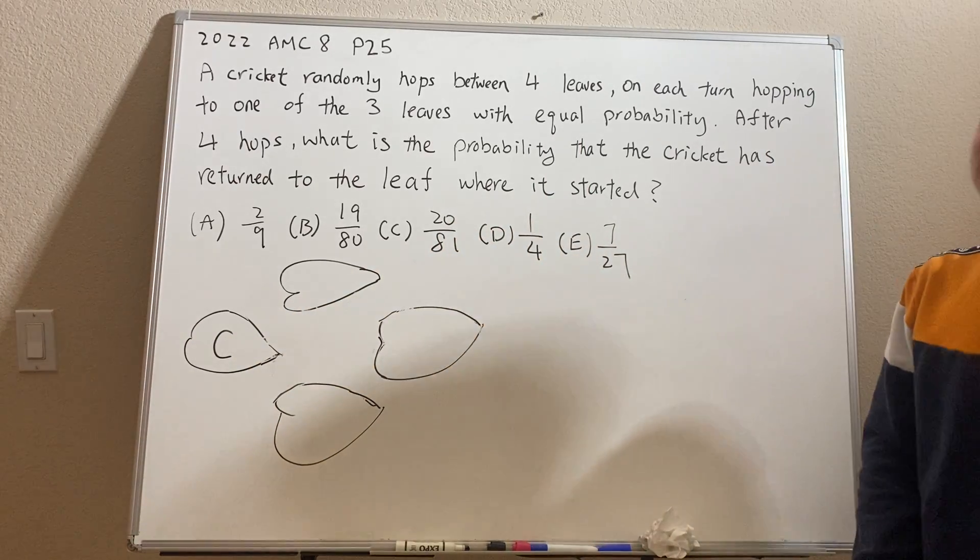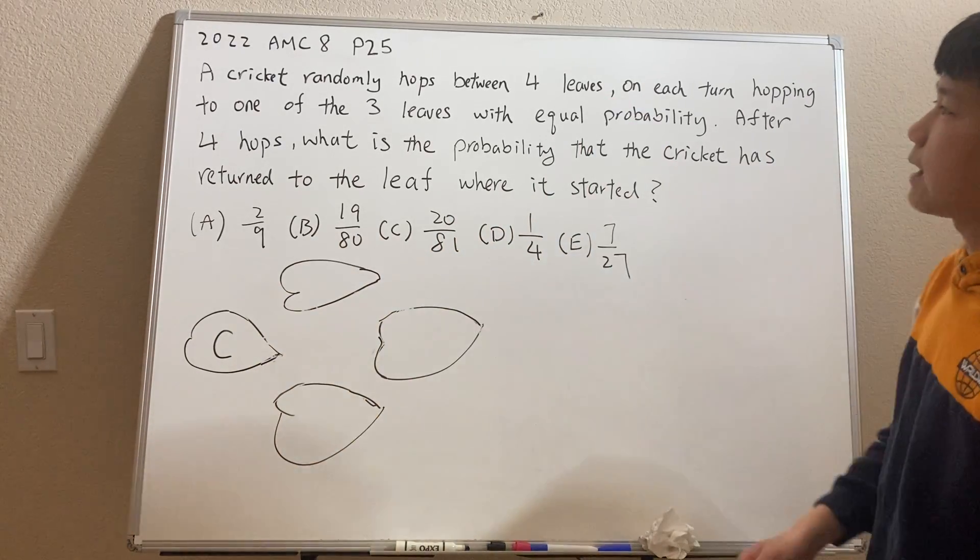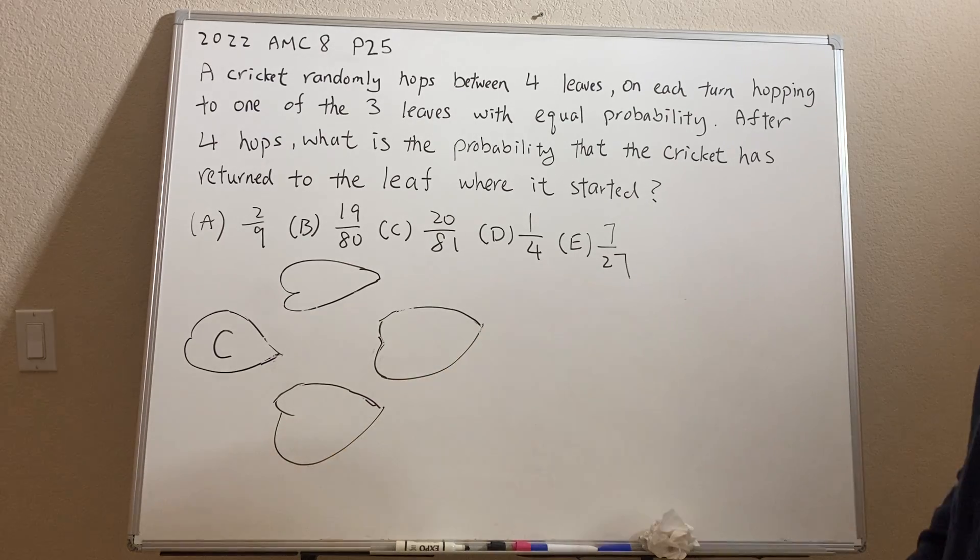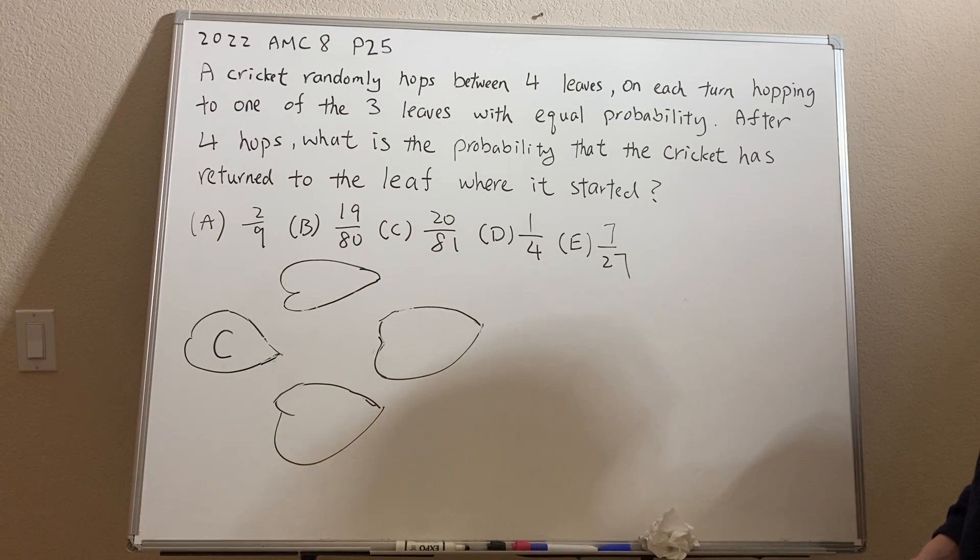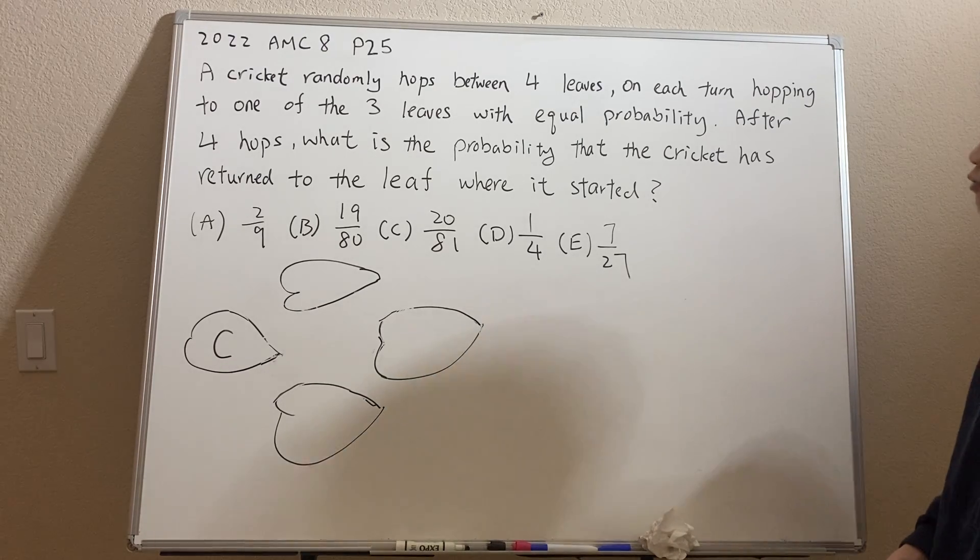Hello everybody, this is MattJetIV and today we're going to be attacking 2022 AMC 8 problem 25. A cricket randomly hops between four leaves on each turn, hopping to one of the three leaves with equal probability. After four hops, what is the probability that the cricket has returned to the leaf where it started?